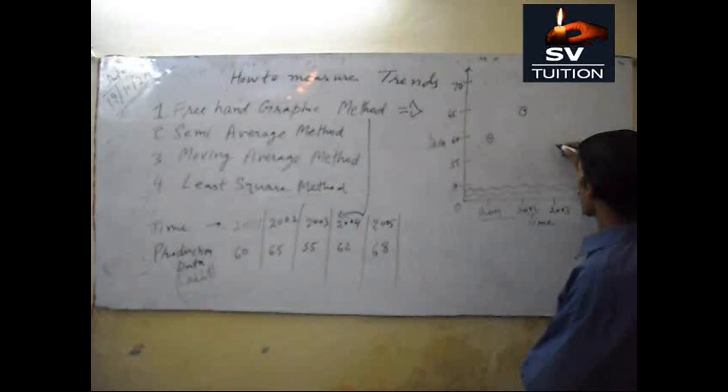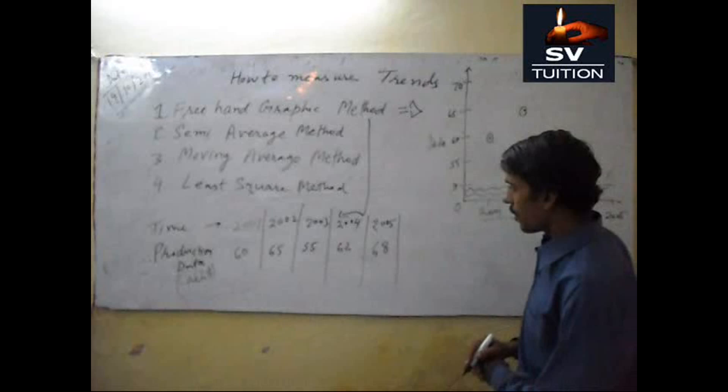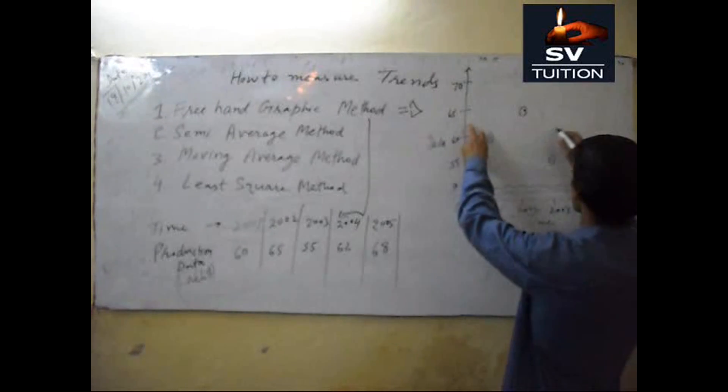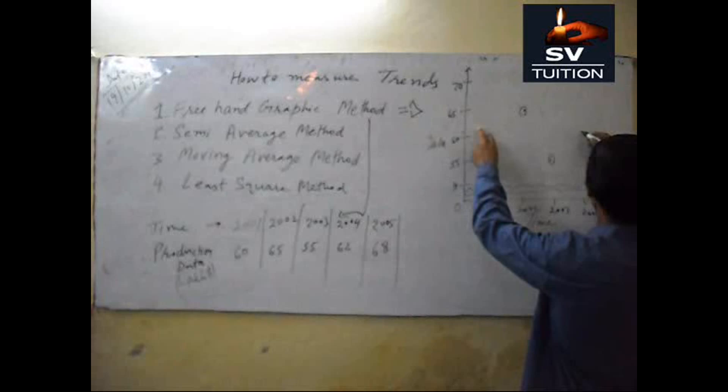And then 62, this is 60, 62, this is 62 approximate here.